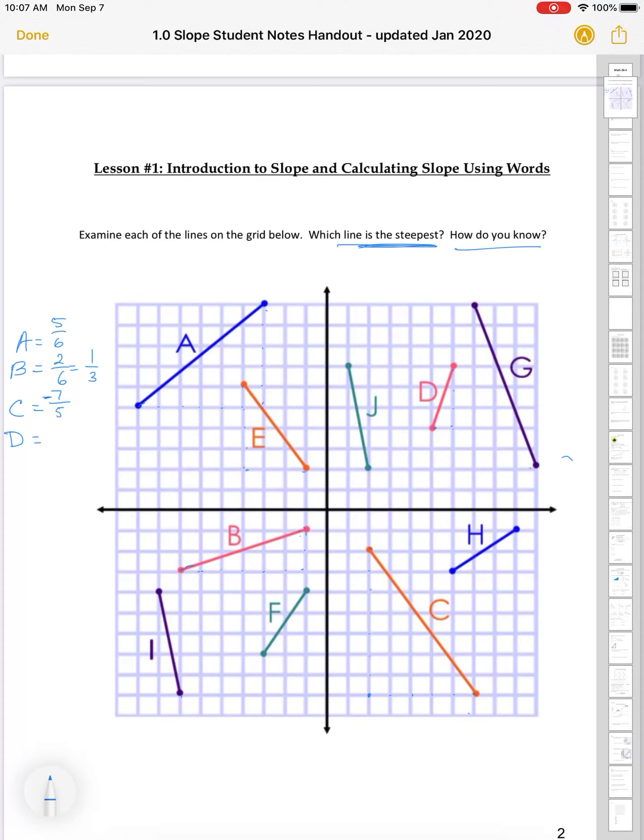D. D, looking at D, even though it's a short little line, it's actually pretty steep. It goes up 1, 2, 3, and over 1. So, 3 over 1, which equals 3. E goes up 1, 2, 3, 4, and over 3. So, 4 thirds.